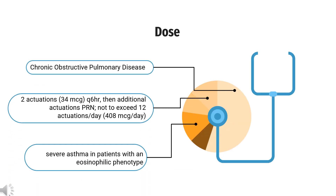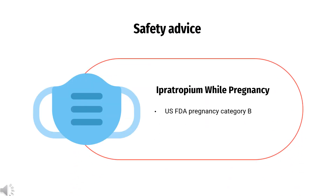How to use Ipertropium? For Chronic Obstructive Pulmonary Disease — Maintenance Treatment of Bronchospasm, including chronic bronchitis and emphysema: Inhaler 2 actuations 34 mcg Q6HR, then additional actuations PRN, not to exceed 12 actuations per day (408 mcg/day); Nebulizer 2.5 mL 500 mcg Q6–8HR. For Acute Asthma Exacerbation (off-label): Inhaler 8 actuations 136 mcg Q20-minute PRN for 3 hours; Nebulizer 500 mcg Q20-minute for 3 doses, then PRN.